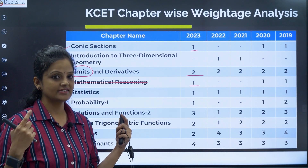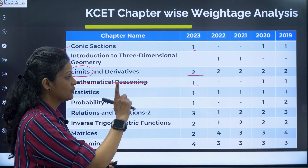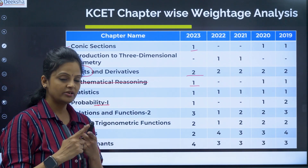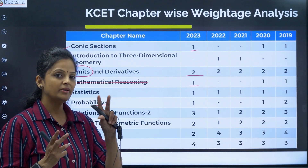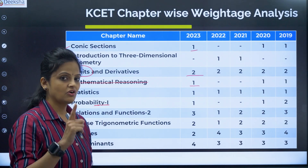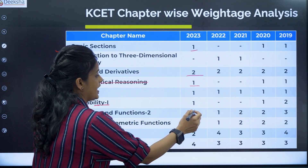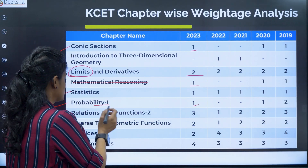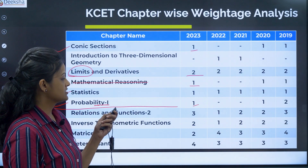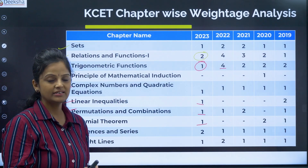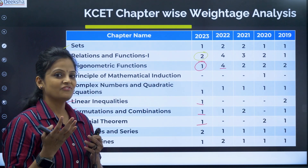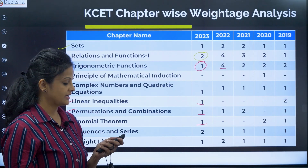Statistics is a large chapter, but one question will appear from that. For Probability, the continued part is in second year. Probability part one covers basic sample space and classical probability problems — one question will be there. The continued part will be in second PUC. So till here, all are first PUC chapters. Go through them once if you want. First year PUC chapters have less weightage compared to second year.